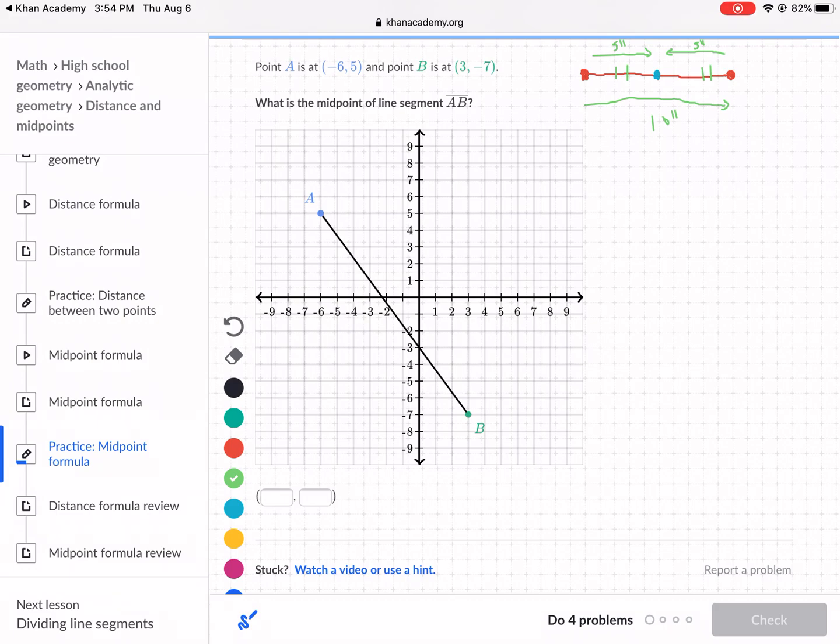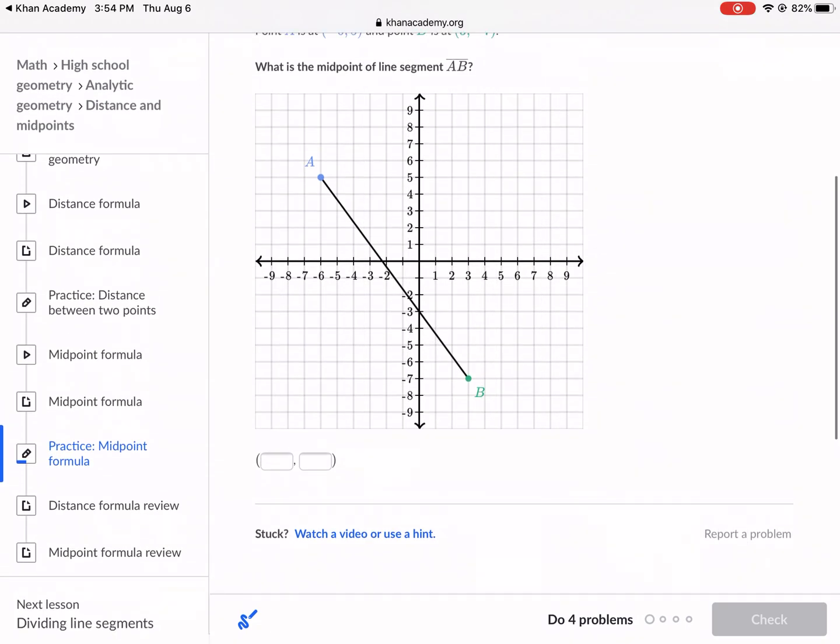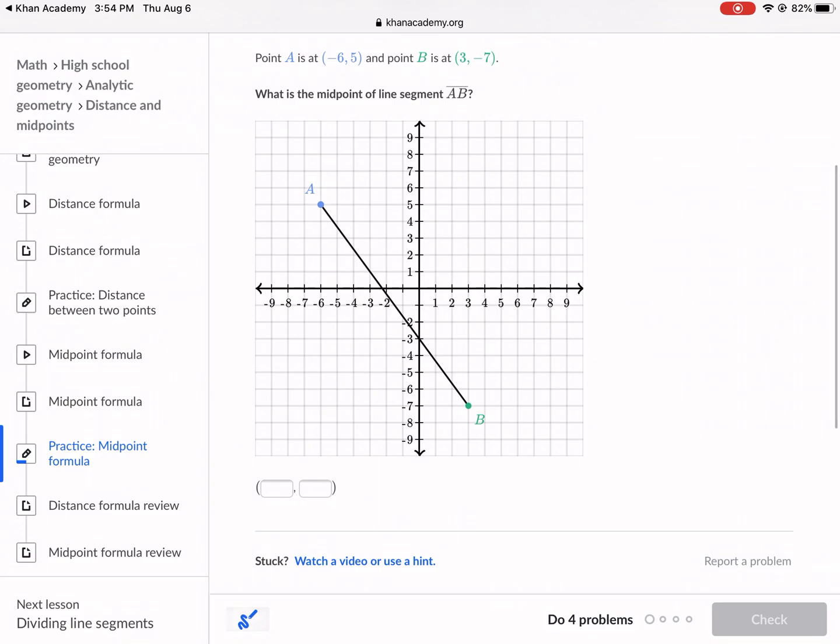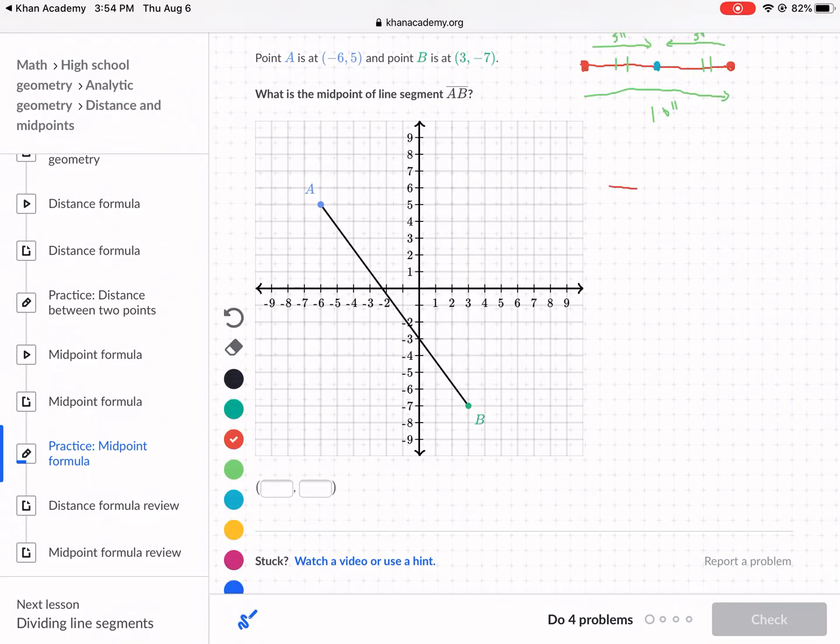Now how do we go about finding a midpoint when it's like a diagonal line like this, where A and B are not in the same horizontal or vertical axes? What we're going to do is break it down into two components: the horizontal component, which is the x-axis, and the vertical component, which is the y-axis. Let's start with the x-axis, but even before we do that, we should probably label these points. Let's label it on the graph: negative 6, 5 and 3, negative 7.